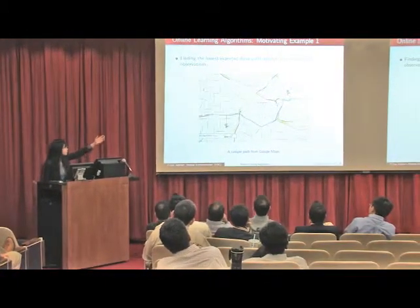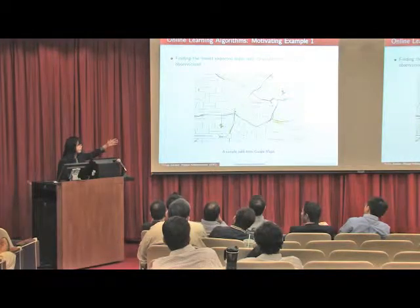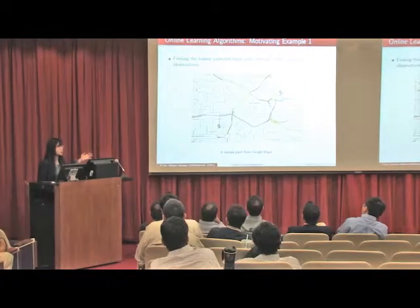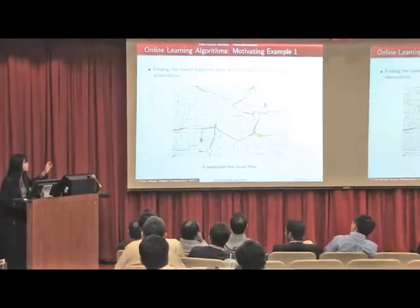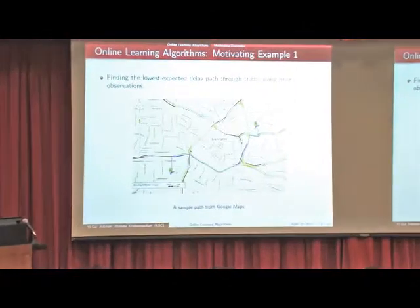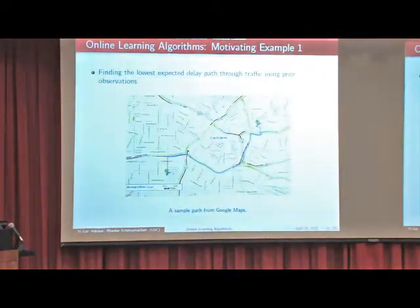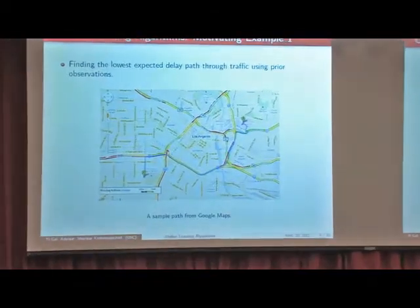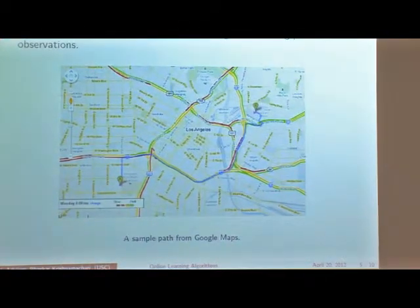On the first day you may try a particular path, the second day another one, and the third day yet another. The delay due to traffic on each road segment can be thought of as random variables that vary randomly over time with some unknown distributions. Our question is: how can we learn through our observations on successive days which the best possible path is?